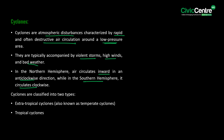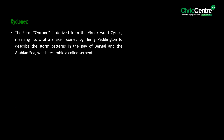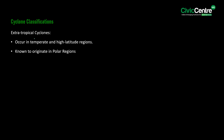Cyclones are classified into two types: extra-tropical cyclones, also called temperate cyclones, and tropical cyclones. The term cyclone is derived from the Greek word 'cyclos' meaning coils of a snake, coined by Henry Peddington to describe storm patterns in the Bay of Bengal and the Arabian Sea, which resemble a coiled serpent.